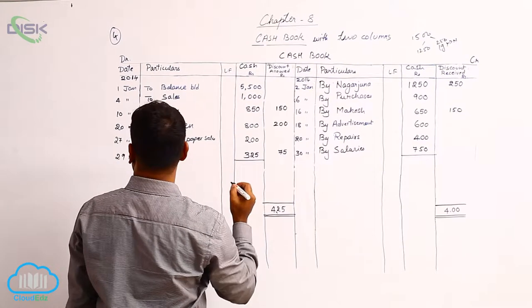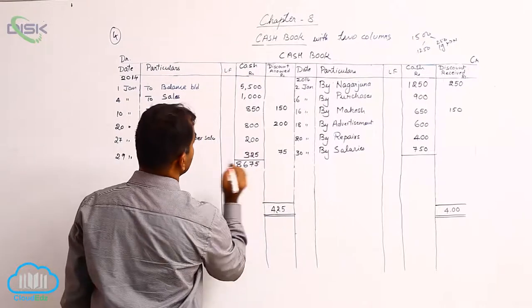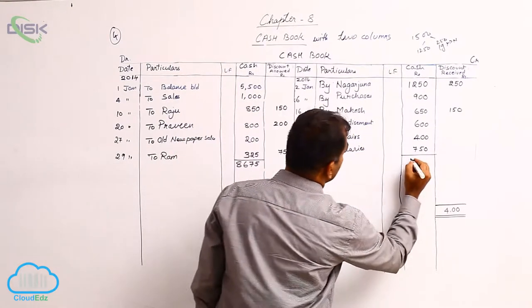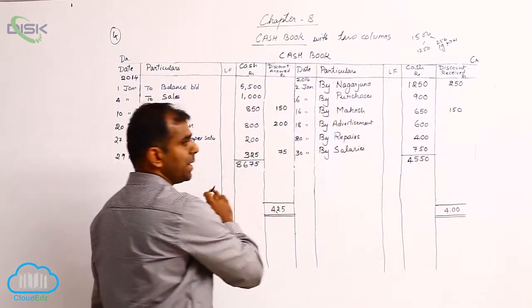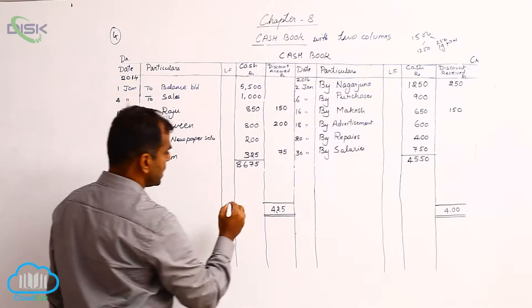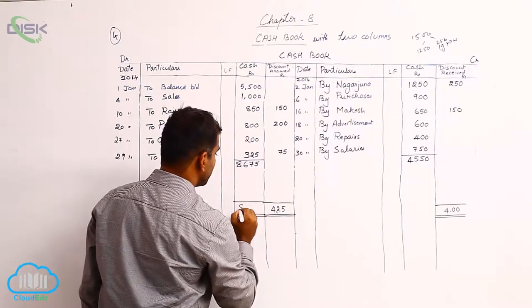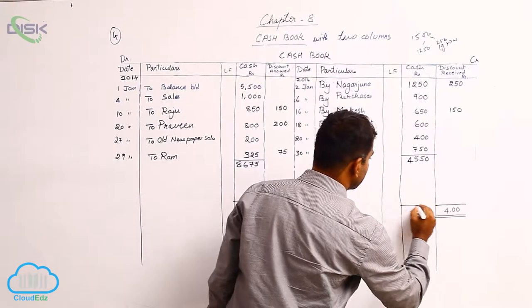We have the debit side total coming to 8,675, and the credit side total coming to 4,550. If you compare both, the debit side total is more, so we are going to write this total on both sides: 8,675 on both sides.